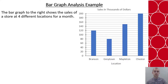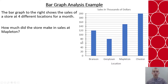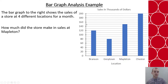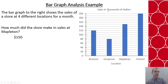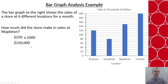Now let's look at a bar graph example. We have a bar graph of a store's sales in a month at four different locations, and we want to know how much they sold in Mapleton for the month. Mapleton's bar comes to a minor tick mark between 140 and 160, so that's exactly 150. But the sales are in thousands of dollars, so I multiply by 1,000 — Mapleton sold $150,000 in sales in a month.